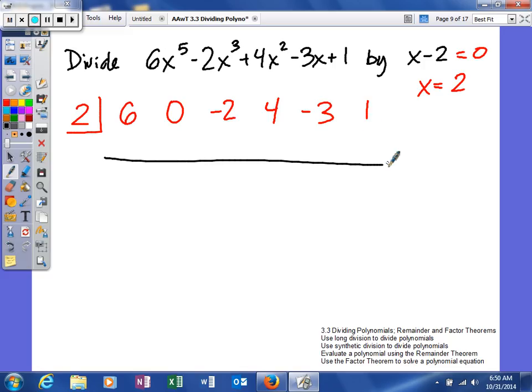As a reminder of what happens first: we bring down the first number, so 6 goes below the line. Anything below the line gets multiplied by what's in the box, so 6 times 2 is 12. Any two numbers above the line get added together, so we get 12. Multiply 2 times 12 to get 24, then add those together to get 22.